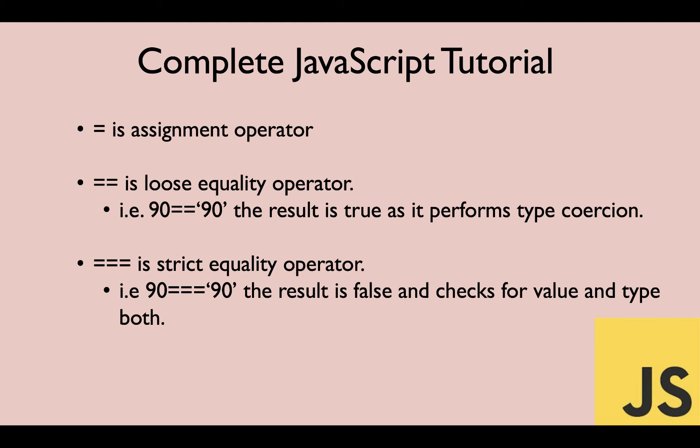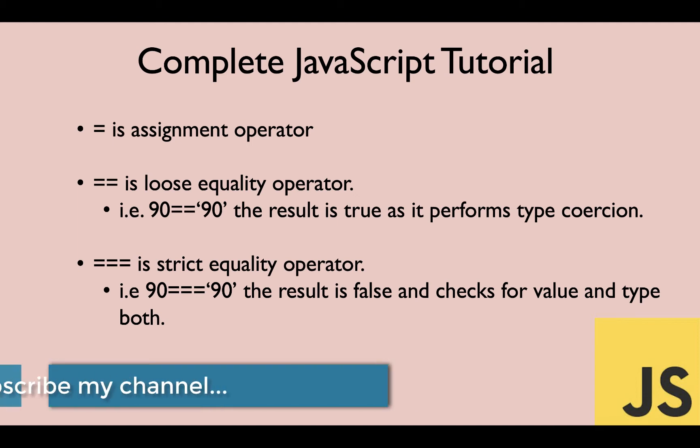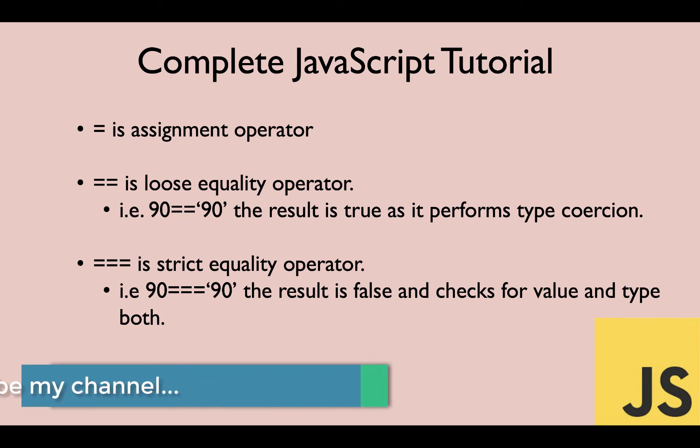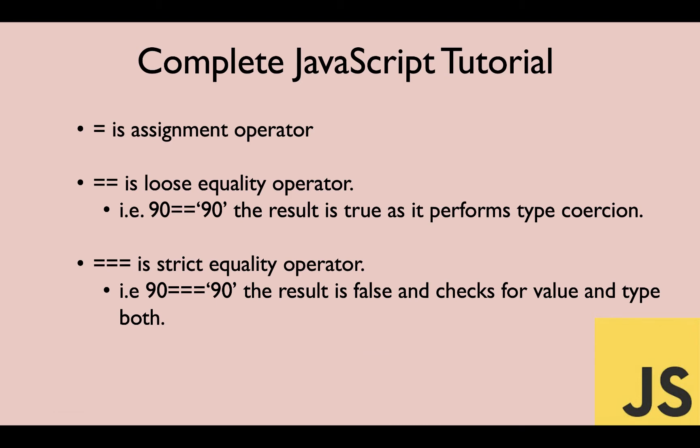We will also cover why we say it is performing type coercion. For example, comparing 90 to string '90' results in true — it is performing type coercion. We will talk about that in this session. The triple equal to is a strict equality operator, and we will also see in detail what exactly that is and how we check that.